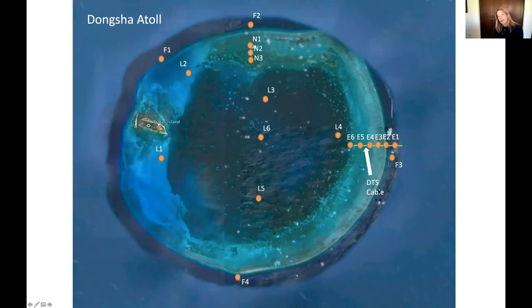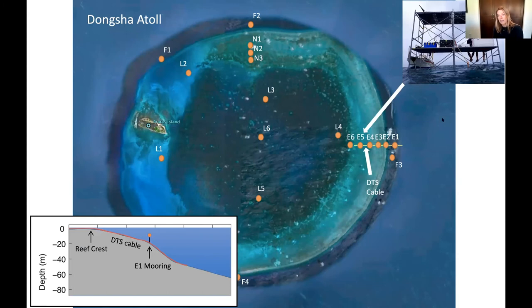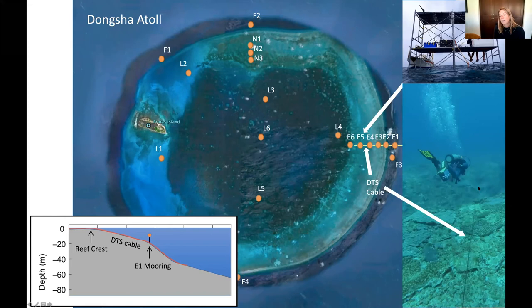Our setup had a lot of instruments, but I'm going to focus on the DTS cable, which is the yellow line on the east fore reef — going over the reef flat and then down the fore reef slope. We had our DTS sitting on the scaffolding, along with a wind turbine and solar panels powering the system to a bank of marine batteries, since we didn't have a plug out there. The cable runs three kilometers across the reef and then a kilometer offshore down to about 50 meters depth.